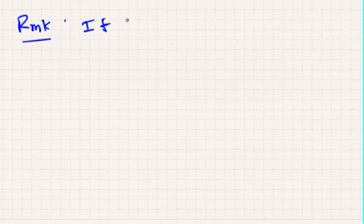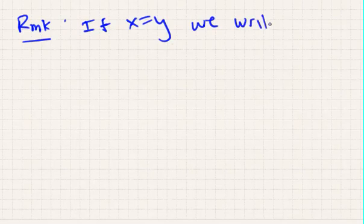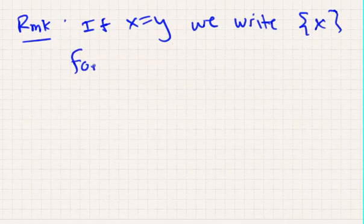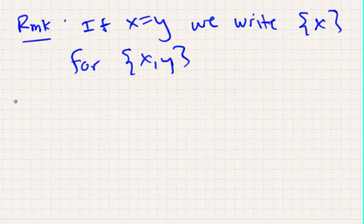A remark on this is if x is equal to y in the previous definition, we write instead of x comma y, we write just the curly brackets x. Now, this allows us to formally define an ordered pair.